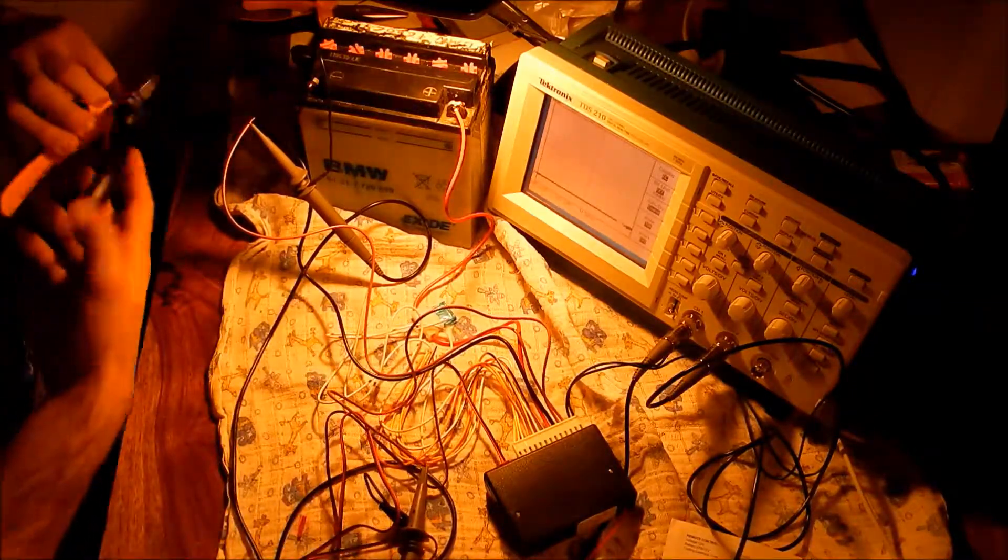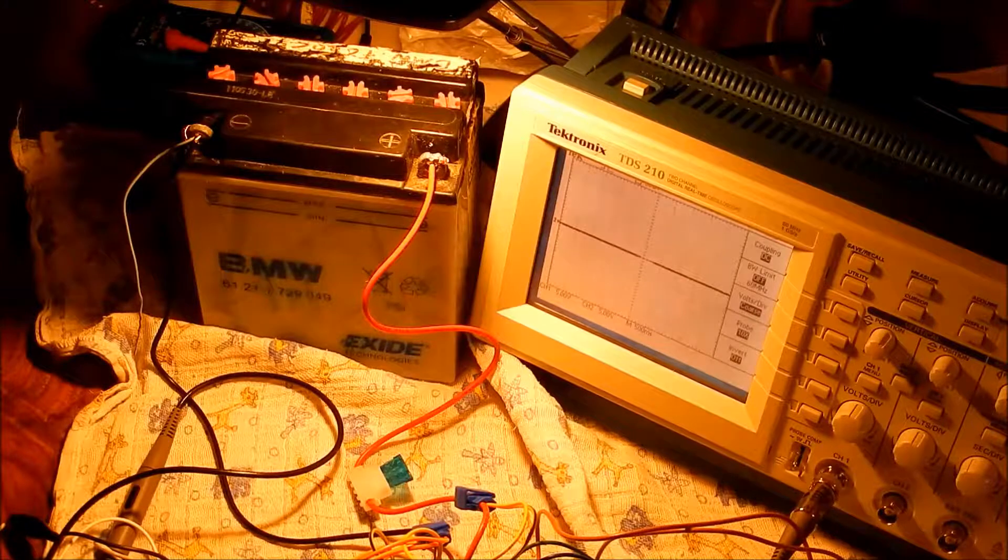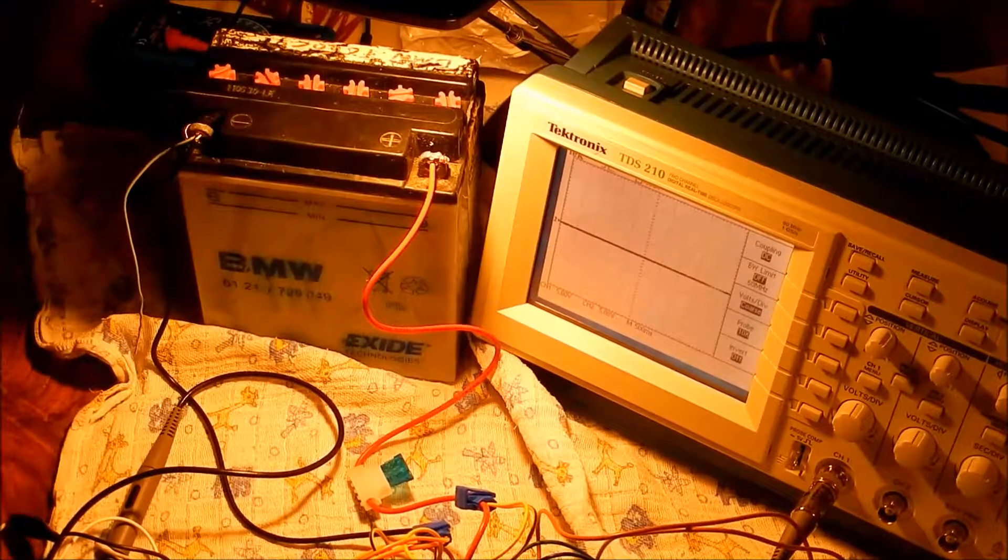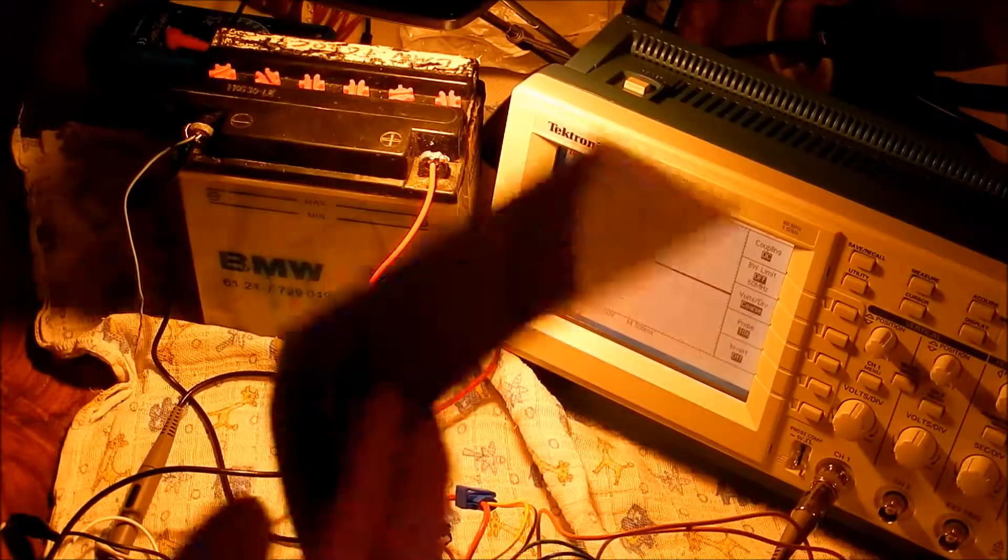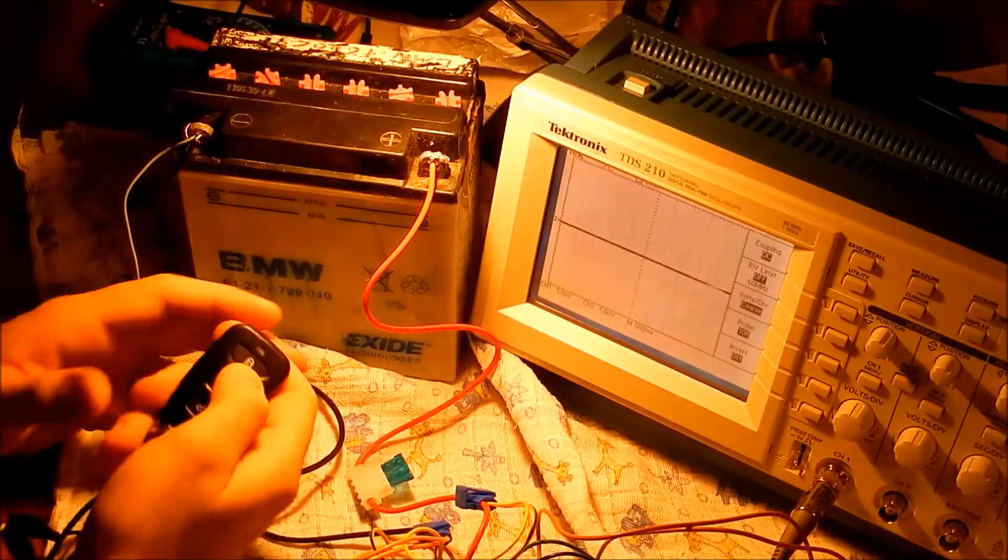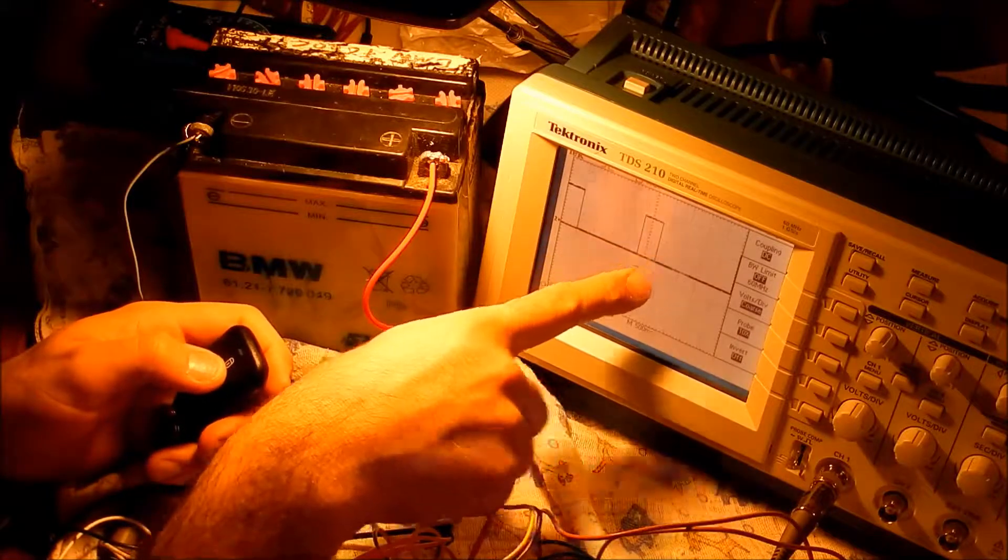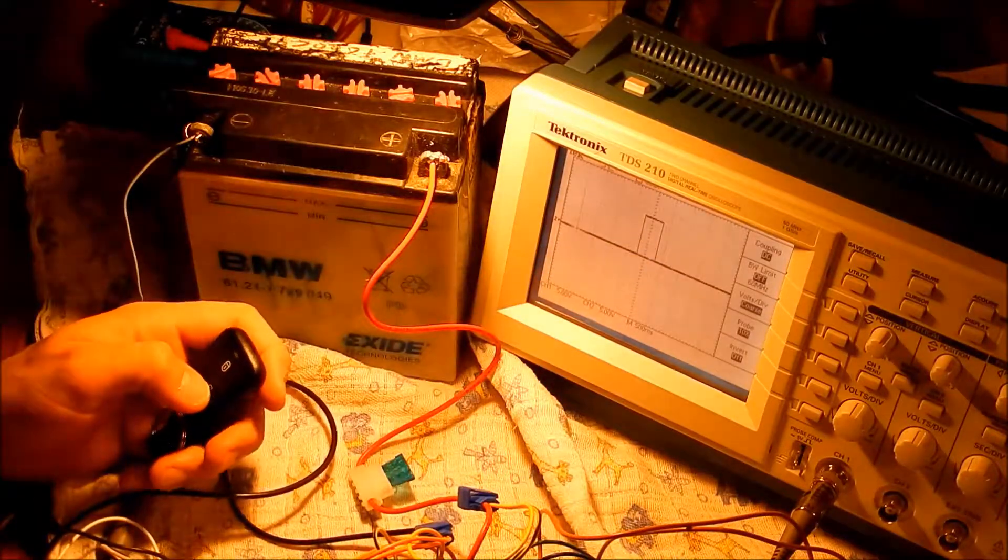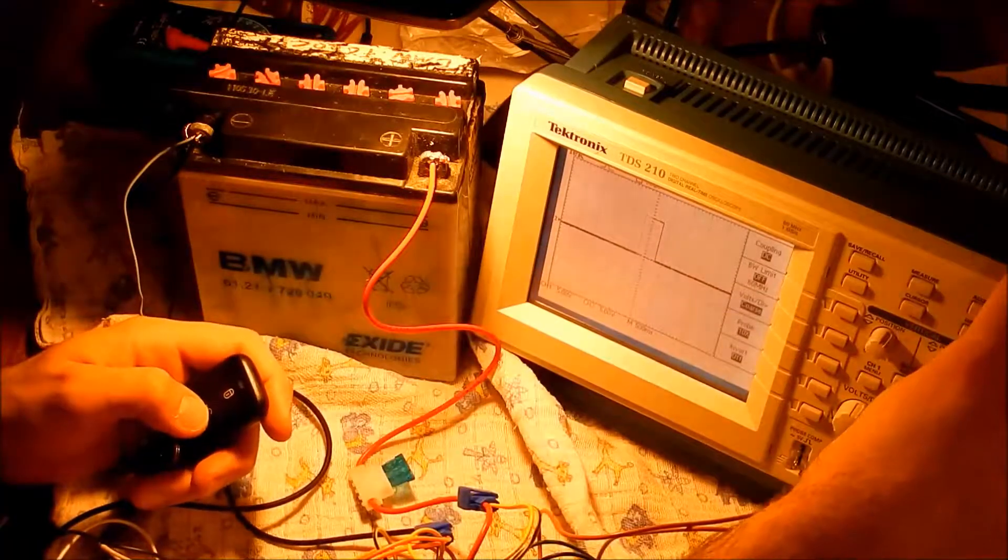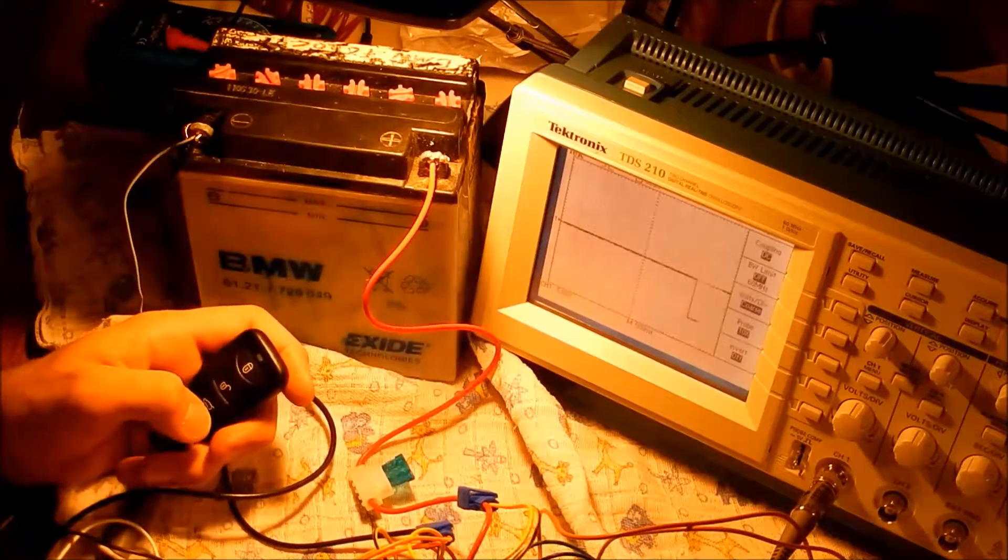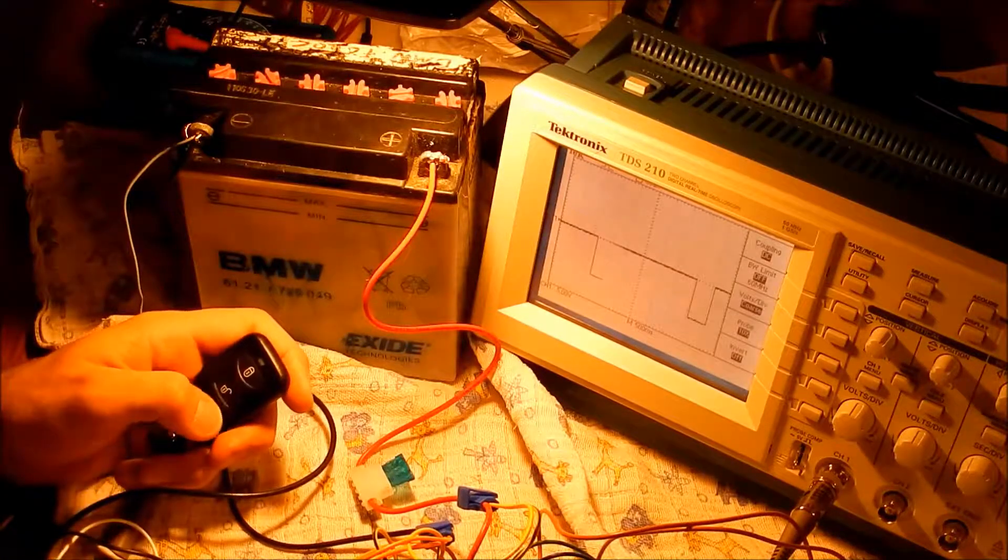Done those two. So got it all connected here the way it should be according to the manual. What happens is when I close the car, you see it goes up here on the scope. And when I open the car up, let's take channel two away, when I open the car it goes down.